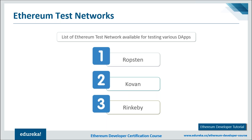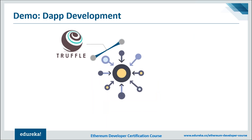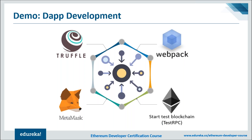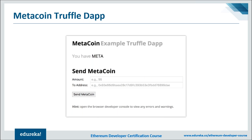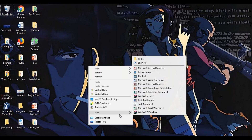Now it's time to execute the demo. We're going to build a decentralized application using the Truffle framework, the Webpack bundler, and the TestRPC/Ganache CLI test blockchain network — where we'll deploy our decentralized application. We'll then integrate the TestRPC accounts with MetaMask. This demo uses the MetaCoin contract available through Truffle Boxes. First, create an empty folder on your desktop named 'metacoin', then open your command prompt, navigate to that folder, and run the truffle unbox webpack command.